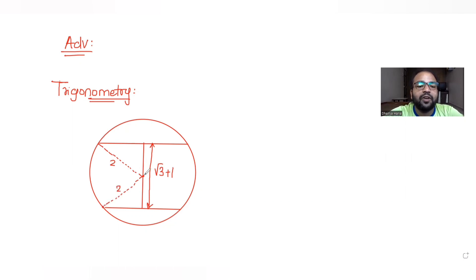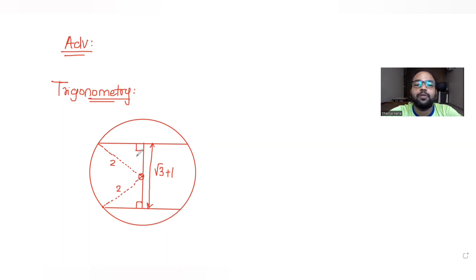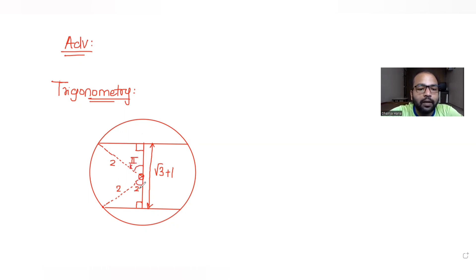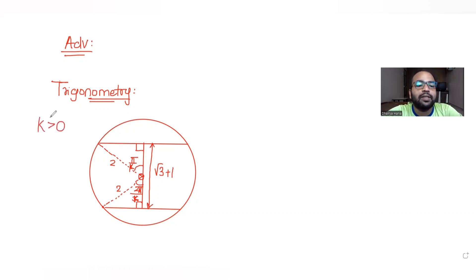On both sides, if I join the center of the circle with the chord, I get the radius as 2 units. We know that a line from the center of the circle perpendicular to a chord bisects it. We are also told that these chords subtend angles of π/k and 2π/k at the center, and k is greater than zero.